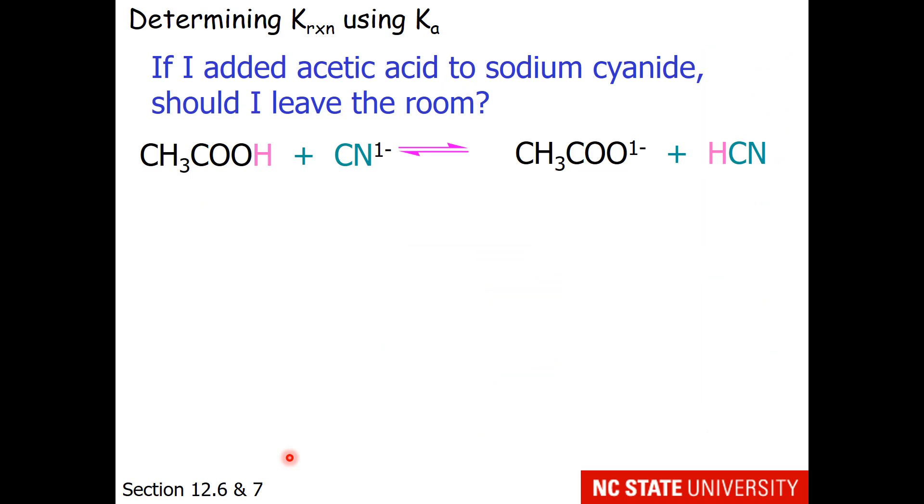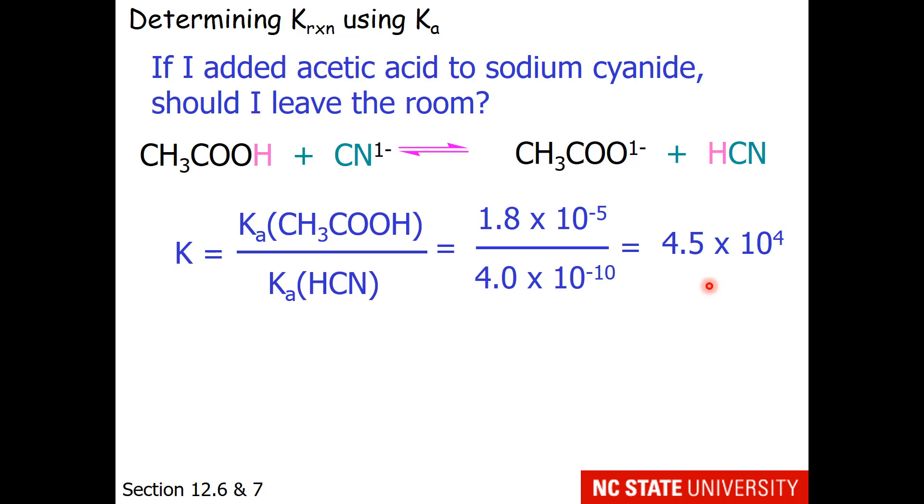Let me substitute those values. I take the Ka of the reacting acid over the Ka of the produced acid, so positions 1 and 4 on my reaction table. I substitute in the numeric values and I get 4.5 times 10 to the 4.